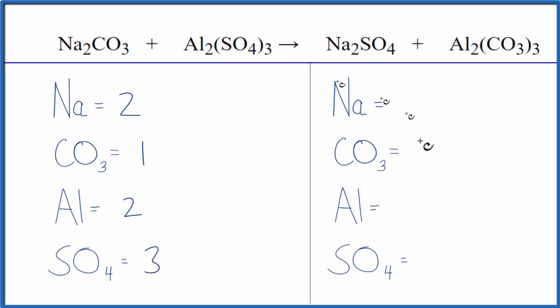On the product side, two sodiums, three carbonates, two aluminums, and one of the sulfates. So you see, that's a lot easier to count those up. It's probably a lot more accurate too. You end up making fewer errors.